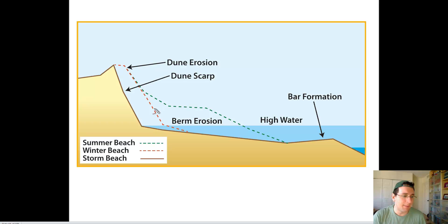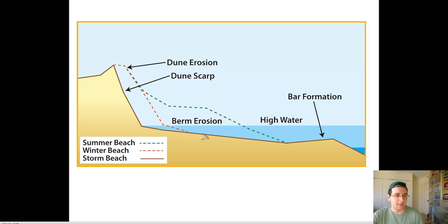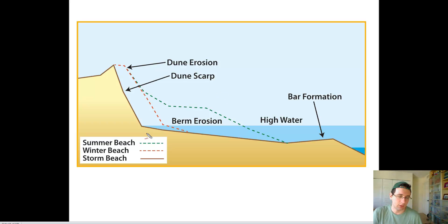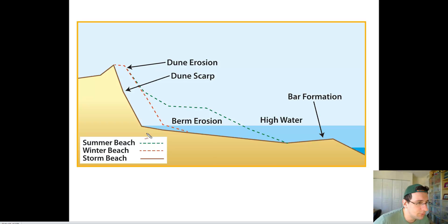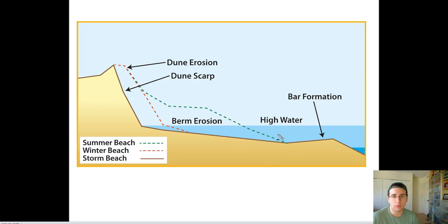Some short-term erosion can happen quickly. Look at the winter beach — that's the one that gets eroded, shown in the red line, giving something that looks like that. Then you have the green line showing how the summer beach would look after deposition of sand materials. If a storm were to happen, you would have a cut through the dune and through the berm way deeper than during a normal winter beach erosion. Beaches can be eroded quite fast through a very bad storm.